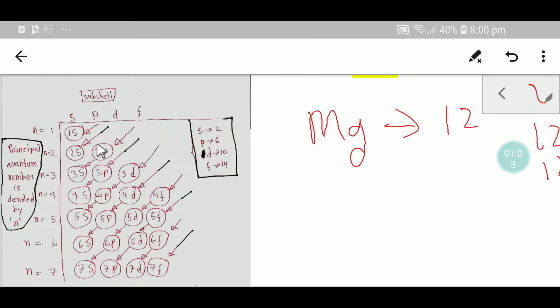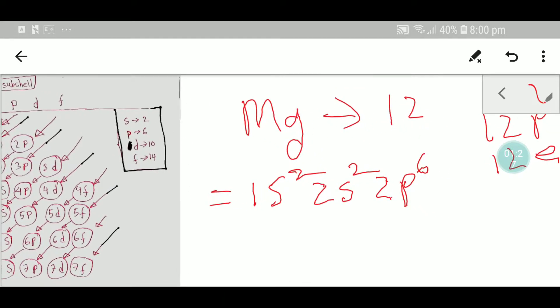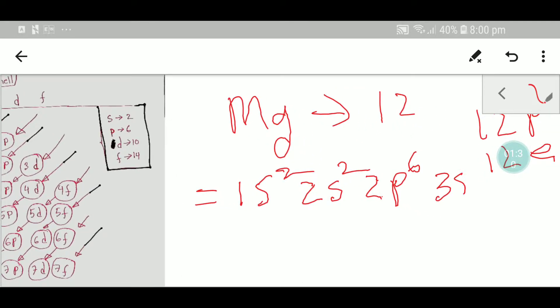So our first 2 electrons will go to 1s2, then we have to place 2 electrons to 2s2, then 2p6, then 3s2. Now you have to add the number of electrons: 2 plus 6 equals 8, plus 2 equals 10, plus 2 equals 12.